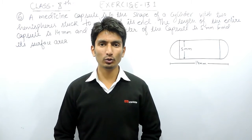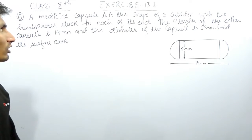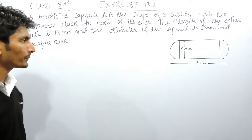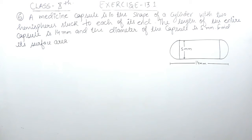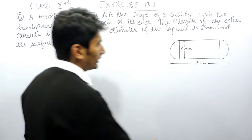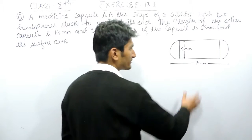Hello everyone, we are from True Maths and in this video we are going to solve question number 6 of exercise 13.1. The question says: a medicine capsule is in the shape of a cylinder with two hemispheres stuck to each of its ends. The length of the entire capsule is 14 millimeters and the diameter of the capsule is 5 millimeters. You have to find its surface area. This is the complete capsule which is in the form of a cylinder.